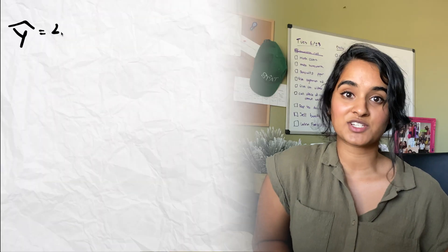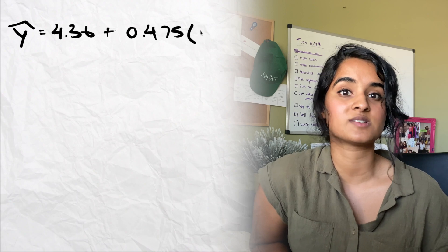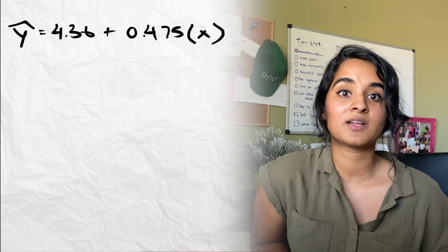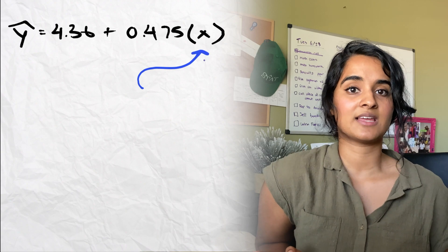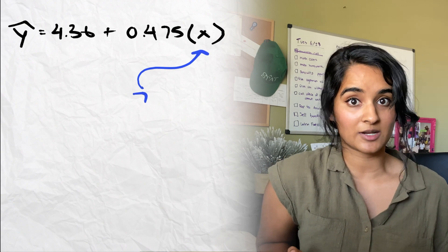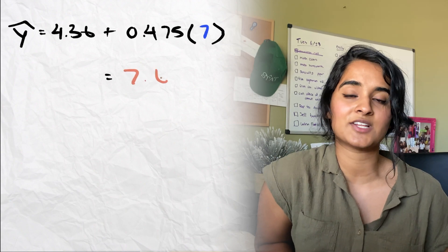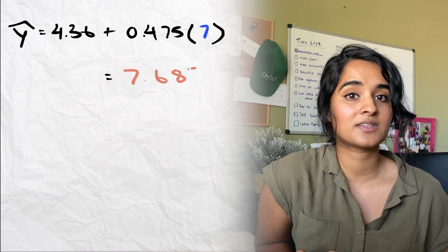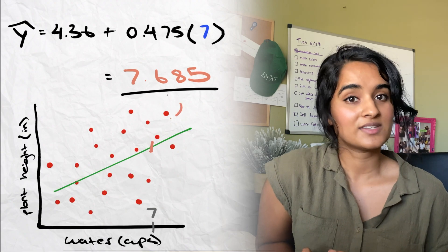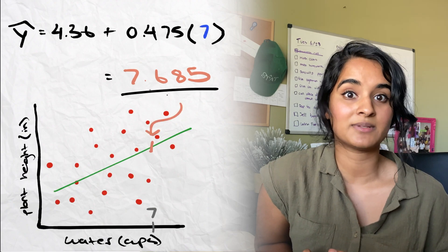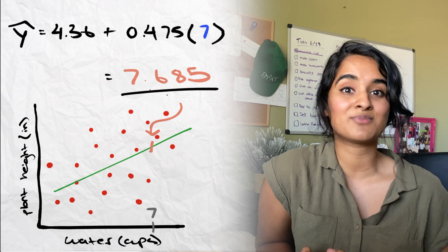So let's do a prediction. Using our regression equation from earlier — y-hat = 4.36 + 0.475x — we plug in our value of how much water we want. Let's say we're trying to predict the height of a plant given 7 cups of water. We plug 7 into x, do some simple algebra, and end up with 7.68. This tells us that the predicted average height of a plant in inches when given 7 cups of water is 7.68.